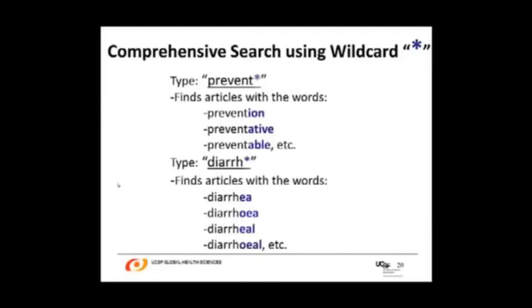For a comprehensive search, you can use the wildcard — the asterisk or star sign. If you type PREVENT* into the PubMed search box, you will find articles with the words PREVENTION, PREVENTIVE, PREVENTABLE, etc. The asterisk substitutes for all different letter combinations that can follow the root word PREVENT, so you don't have to type each variant separately. Similarly, typing DIARRH* covers both the American and British spellings of diarrhea and diarrheal.